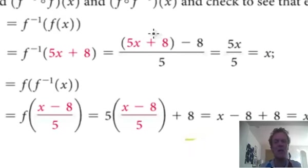OK. What should we do? Well, if we positive 8 take away 8, we'll end up with just 5x over 5. 5 will cancel. I'm left with x. OK?